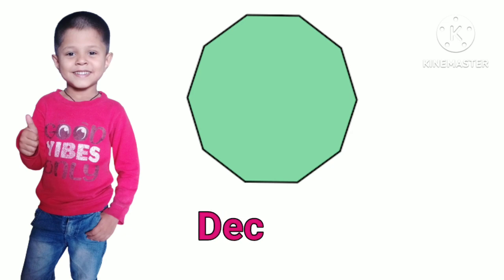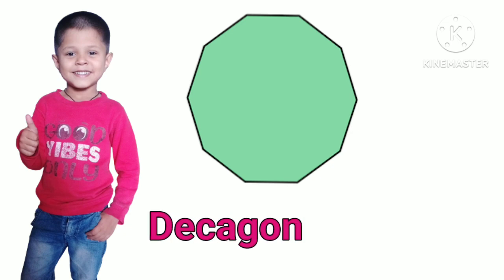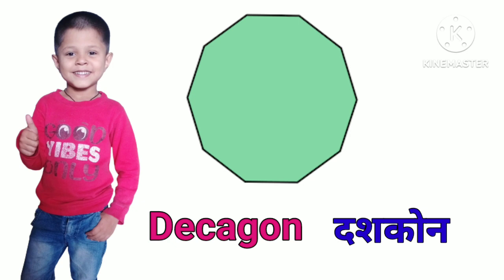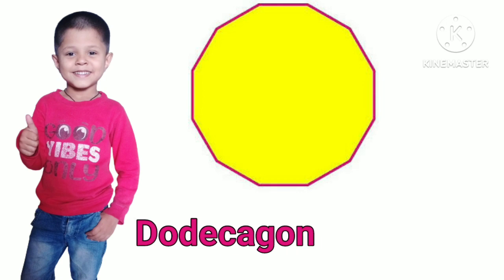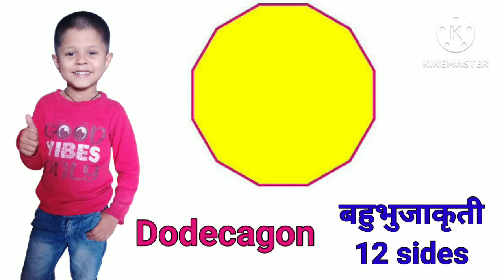Decagon. D-E-C-A-G-O-N. Decagon means Dashagon. Dodecagon means Bahubhujakruti. Dodecagon has 12 sides. Bahubhujakruti.